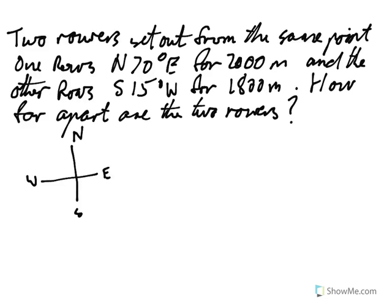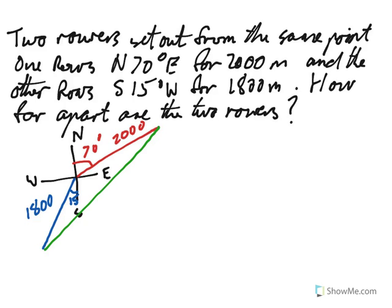Let's draw it up. So one of the rowers, north 70 degrees to the east for 2000, so there's 70 degrees, 2000 meters. The other rowers south 15 degrees to the west for 1800, so there's 1800 and that's 15 in there, south 15 to the west. We want to know how far apart they are, so we want to know that green line there. If we want to know that green line there we need to know this angle in here.